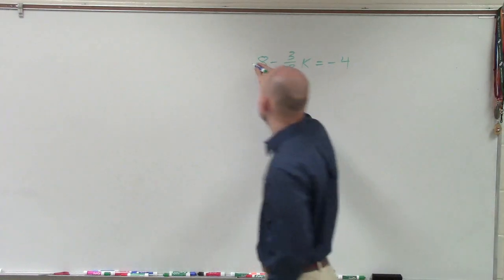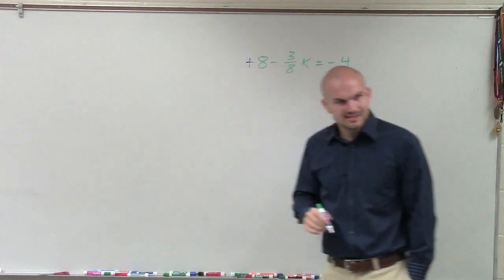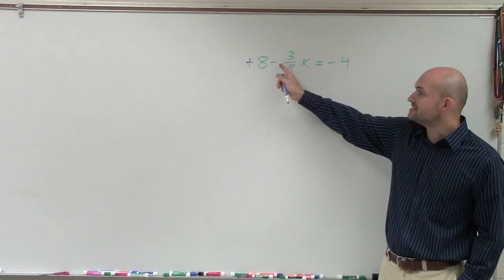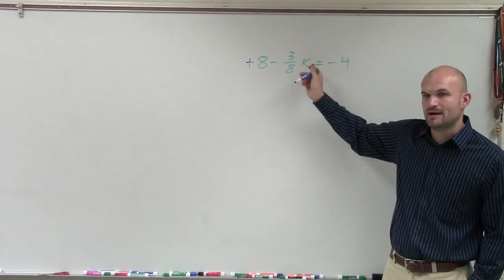Well, no, this 8 is a positive 8, right? That's a positive 8. So the 8 is actually being added to the k, because this is a negative 3/8 that's being multiplied by k.